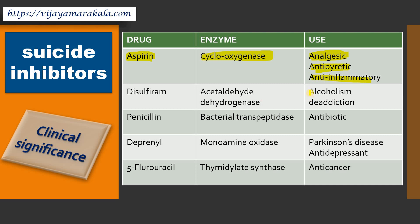Similarly, for alcoholic de-addiction or chronic alcoholic patients, disulfiram is a drug that binds to acetaldehyde dehydrogenase and makes this enzyme inactive, so there is accumulation of acetaldehyde in the liver, producing nausea, vomiting, and alcohol avoidance in the chronic alcoholic patient. Similarly, the antibiotic penicillin kills bacteria by inhibiting bacterial transpeptidase.